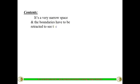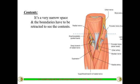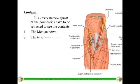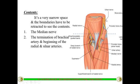Coming to the contents — the cubital fossa is a very small triangle, so the boundaries have to be retracted sidewards to see the contents. One of the important contents is the median nerve, which is the nerve of the forearm and the hand — a very important nerve passing through the cubital fossa.